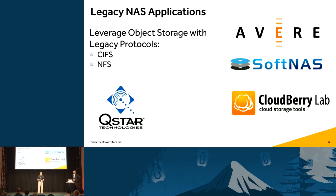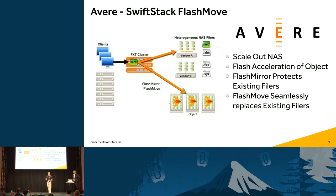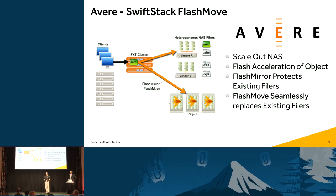We're going to go into Avere and their use case. They've been around for a long time, accelerating SANs and NASs in the media, entertainment, and genomics worlds — and now they can accelerate an object store. One of the first things we see is people looking to move off their traditional NAS. With SwiftStack and Avere, you put a scale-out Avere cluster in front of it. It will import all of your namespaces, accelerate your current NAS, and move all that data over to your SwiftStack object storage. Using a feature called Flash Move, you complete the process and you're running 100% off object storage.